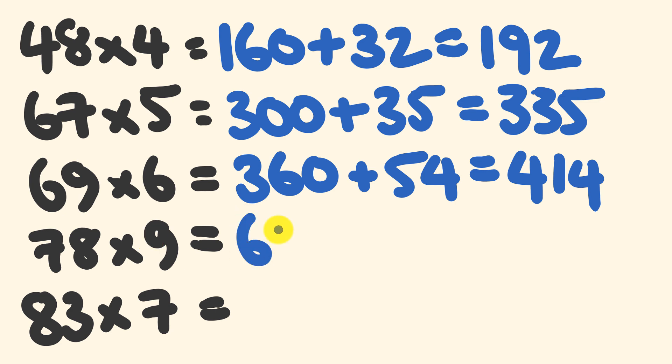So 7 times 9 is 63. 630. To that, we're going to be adding 72. That's going to give you a nice easy answer of 702. And finally, 83 multiplied by 7.